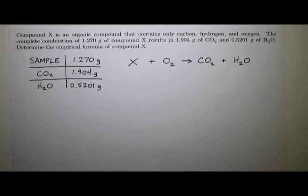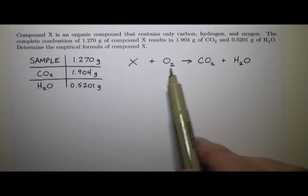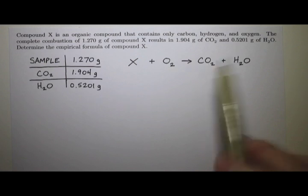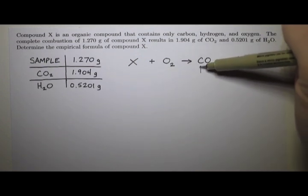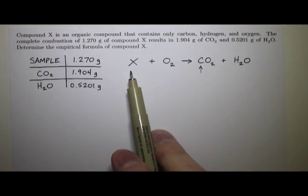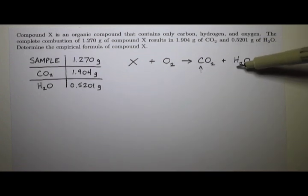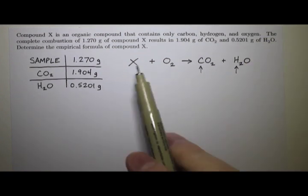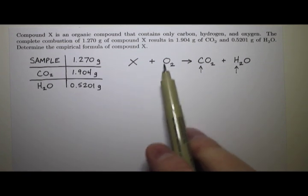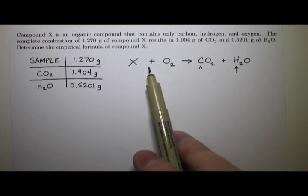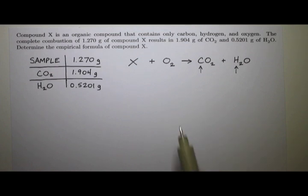Now, compound X only has carbon, hydrogen, and oxygen in it. So when I burn it in the presence of oxygen and get carbon dioxide, all of this carbon must have come from compound X, because it certainly didn't come from this oxygen. And all of this hydrogen also must have come from compound X, because it didn't come from this oxygen here. And so that is a way we can figure out the empirical formula, if we know where all the carbon and all the hydrogen came from.